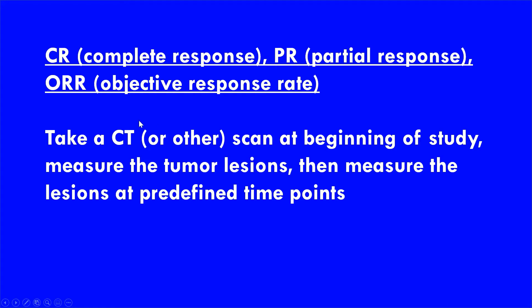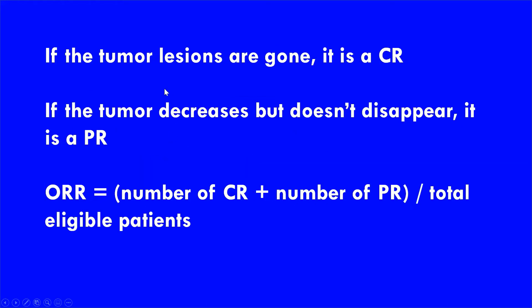Typically, you take a CT or some other scan of a patient at the beginning of the study, measure the tumor lesions, and then at pre-specified time points throughout the rest of the study, you do another scan and measure those lesions to see what happened after the patient has been on the drug for a couple weeks or months. A complete response is when all the tumor lesions are gone — you take a CT scan at the beginning, and if there's no more tumor lesions on the next scan, that's a complete response.